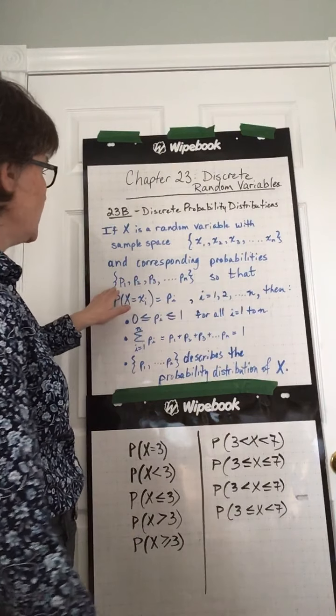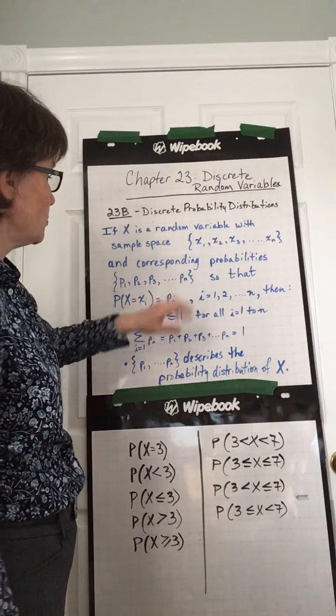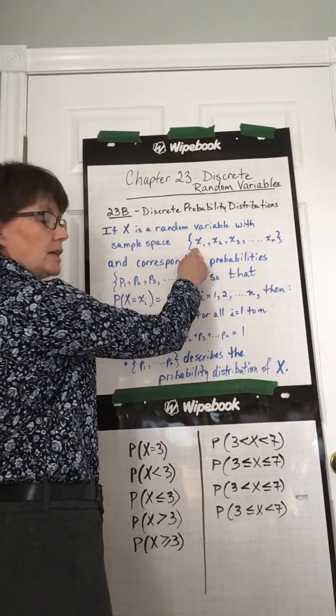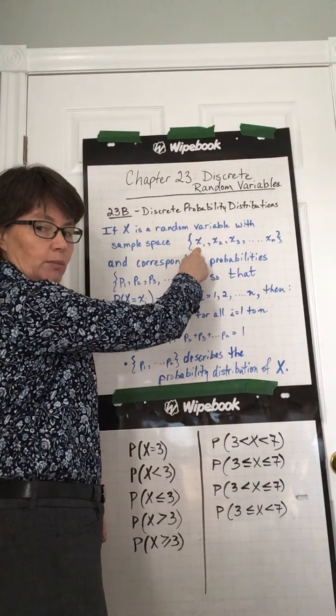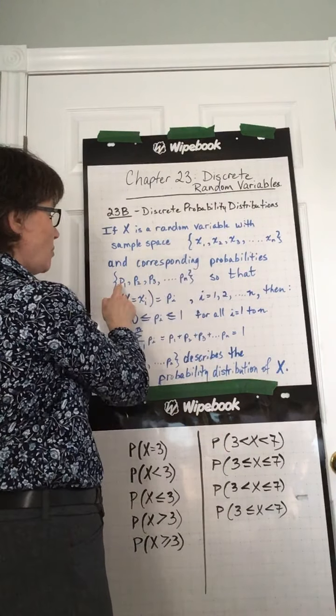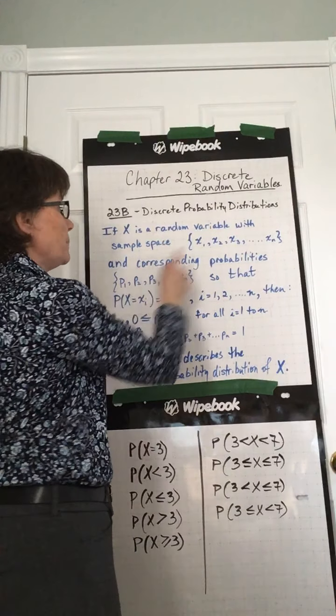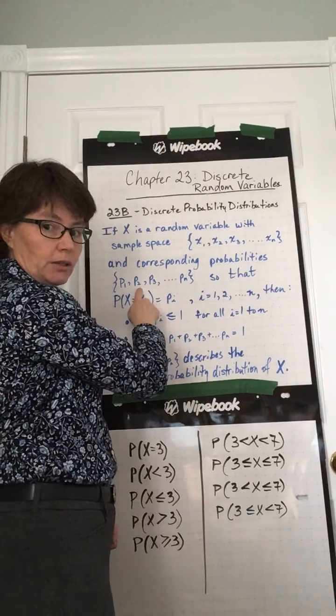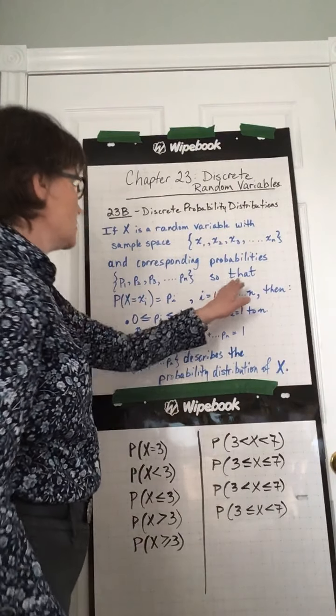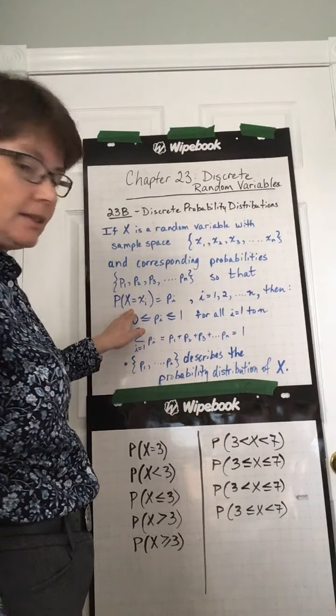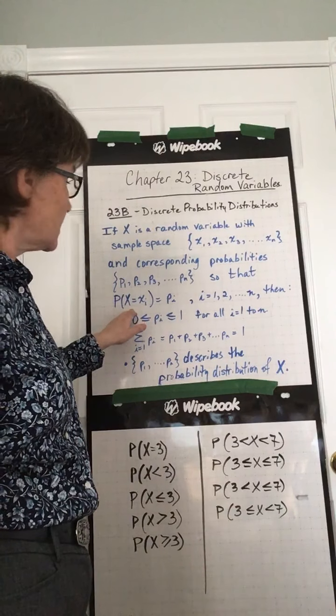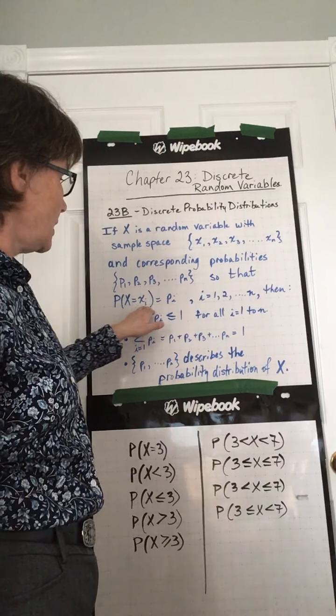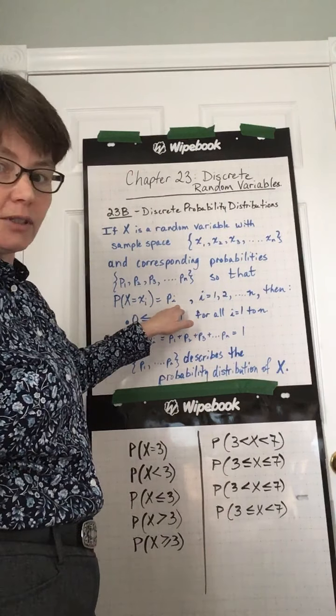And corresponding probabilities, so P1, P2, P3. The sample space, the possible outcome of x1, the probability of that happening is P1. The possible outcome x2, the probability of that happening is P2, and so on. So the probability that the random variable x is equal to xi is actually equal to pi.